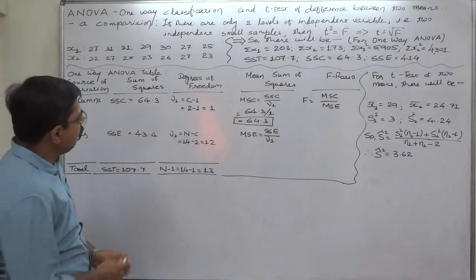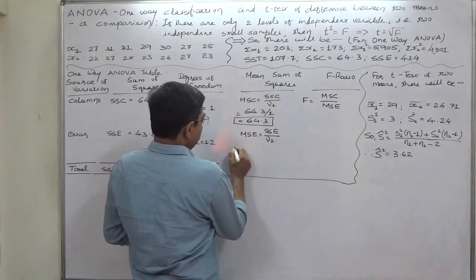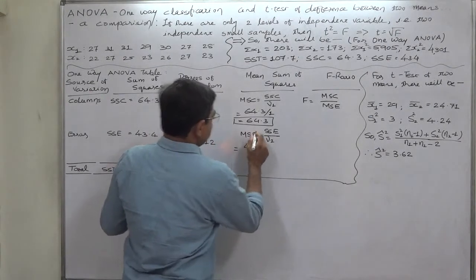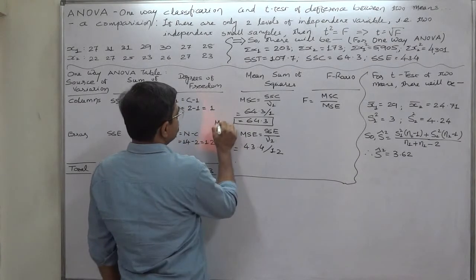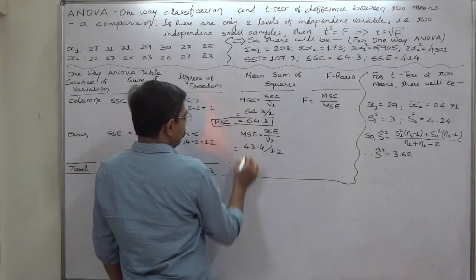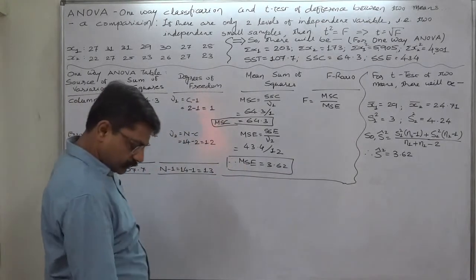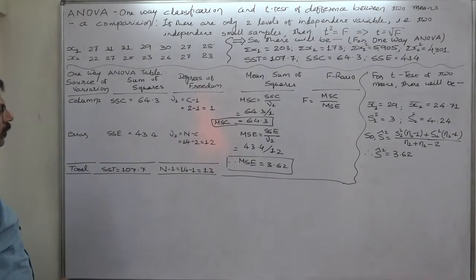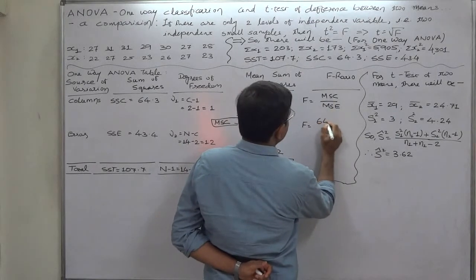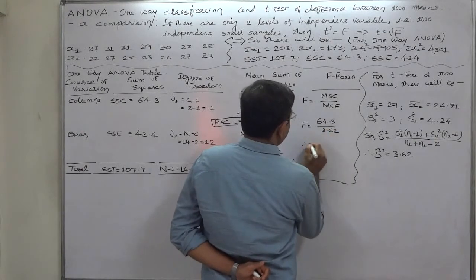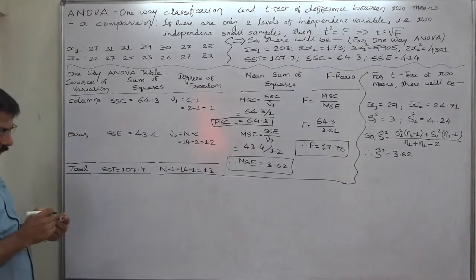On the basis of SSE and its degrees of freedom, we can calculate MSE = 43.4 ÷ 12 = 3.62. Now we can calculate the F ratio for one-way ANOVA: F = MSC ÷ MSE = 64.3 ÷ 3.62 = 17.76, maintaining two decimal places. I leave the full process of testing of hypothesis to you — you can use this F ratio to test the hypothesis about this data.